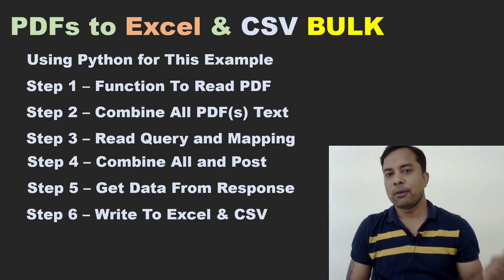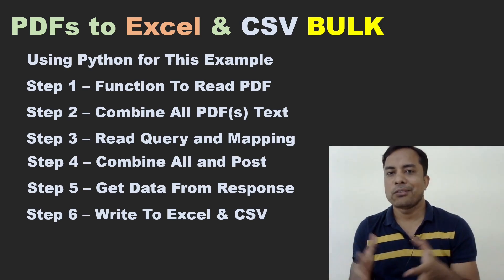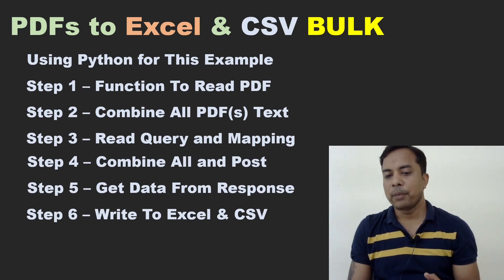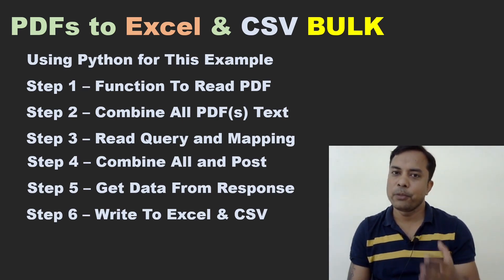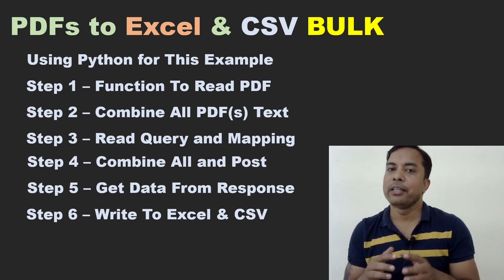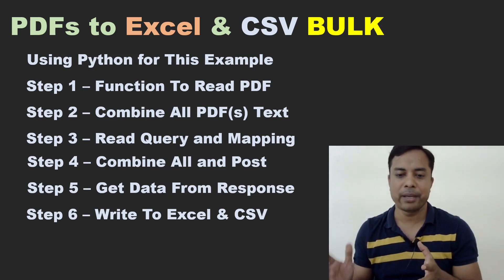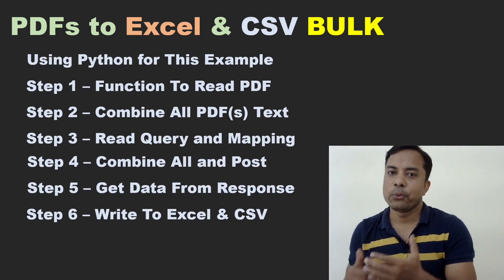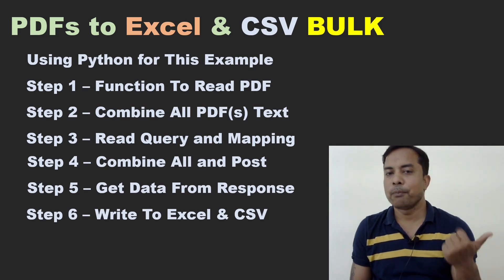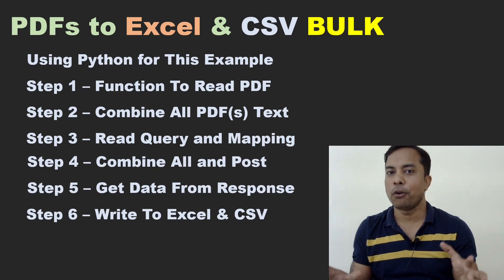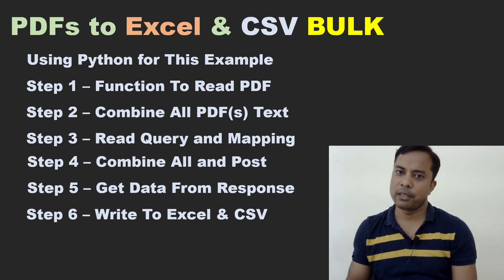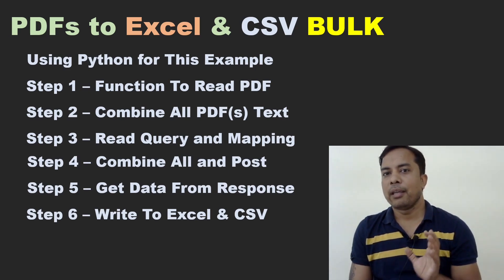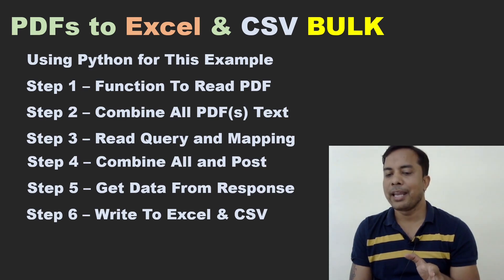I have noted down the functions on screen. First, we will write a function to read all the PDFs from a folder, then combine the text of all the PDFs. In the third step, we read the query and mapping — we have to write some command and give instructions to ChatGPT to get the data we need. All these PDFs are in different formats. Everything combined — the query, the mapping to support ChatGPT, and the combined text of all files — we are going to post this to ChatGPT using the API and get one response. I am using four to five files.